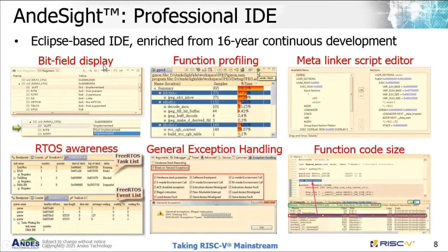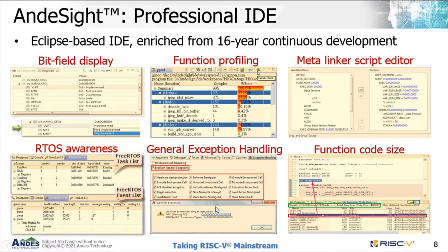To give you an idea of all existing features: we have big field registers display, function profiling, and also the meta-linker script editor — the so-called SAG files — to help you generate and edit linker scripts easily. There are also demos for RTOS awareness, general exception enabling, function code size analysis showing how much size each function consumes, and total stack. These features have been refined through 16 years of continuous development since the IDE was first introduced.